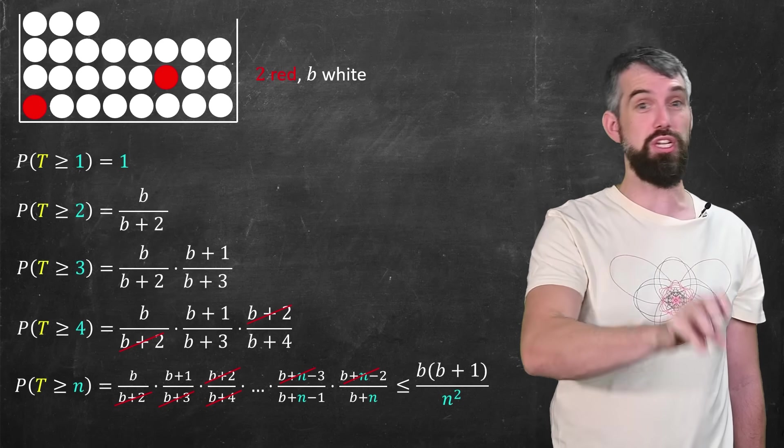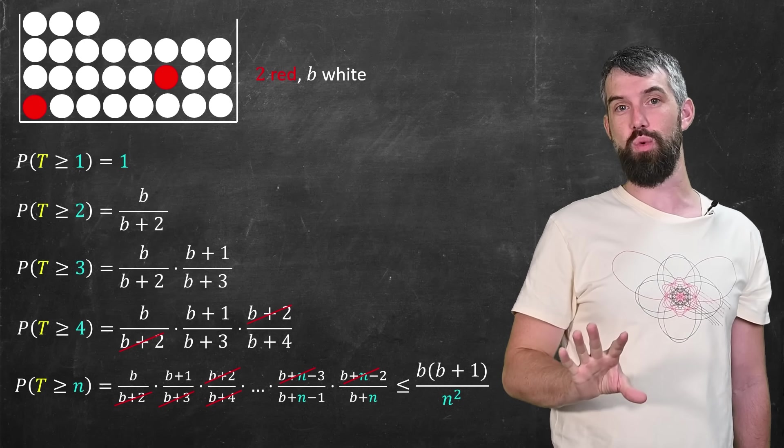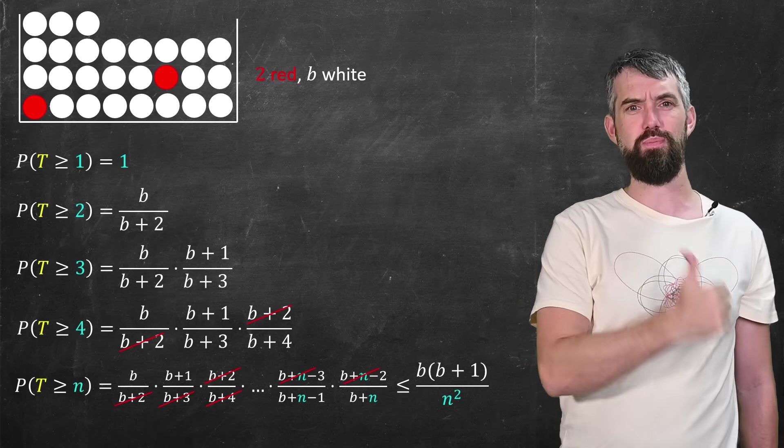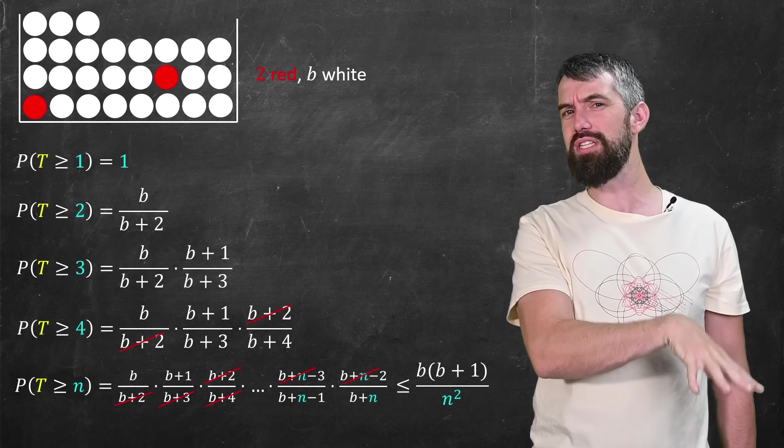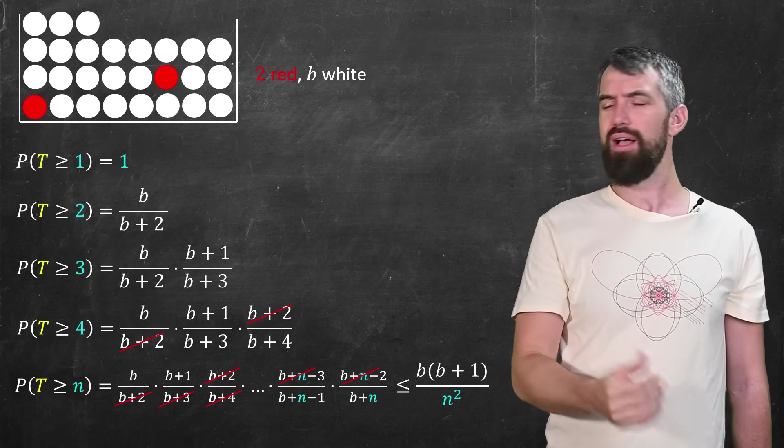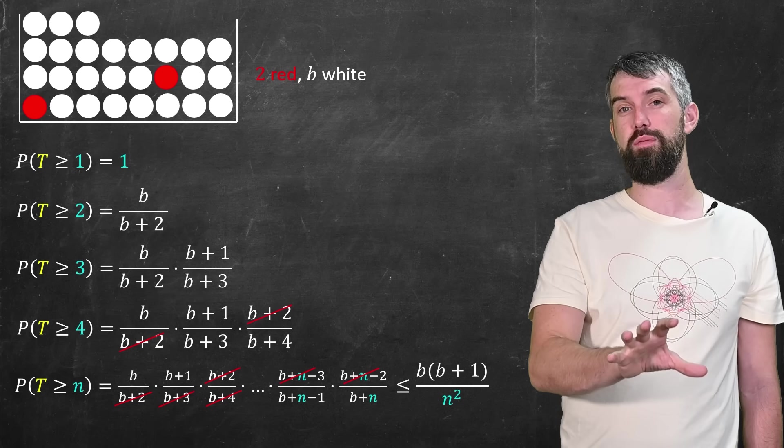The numerator is just b and b plus one. There's a little bit more stuff in the denominator, but it doesn't matter. I'll just say it's less than the value of n squared. That's good enough for me.